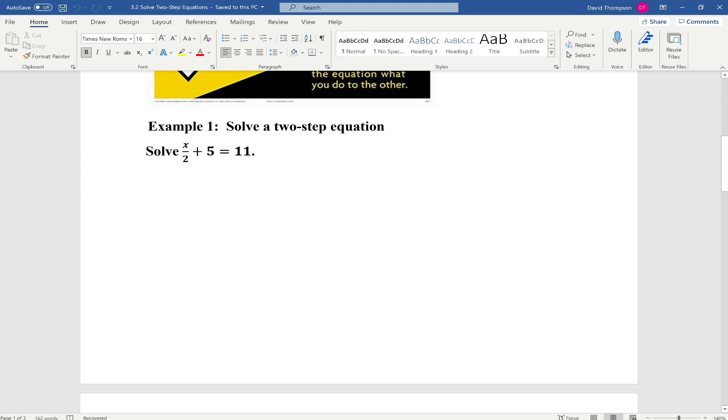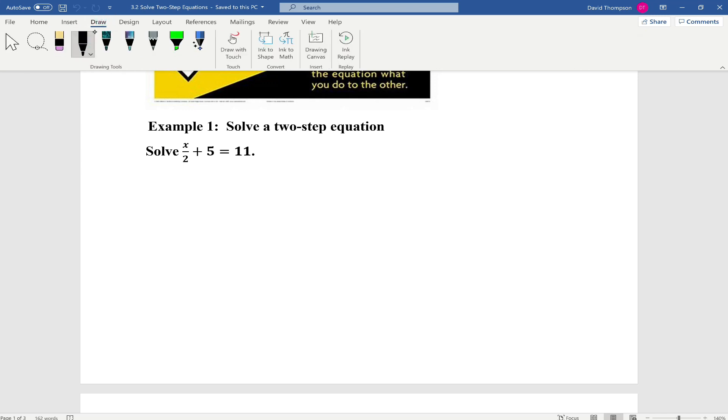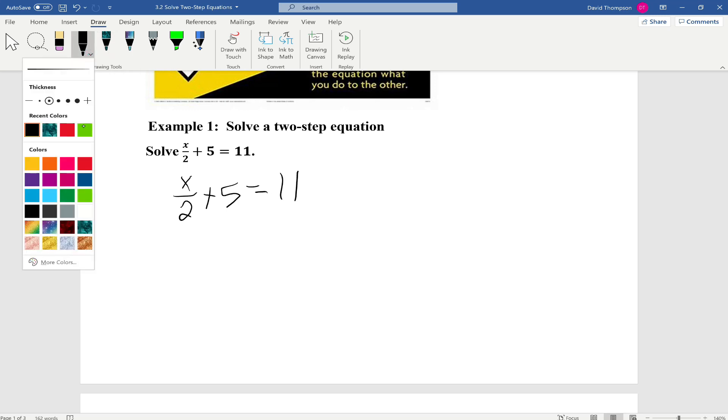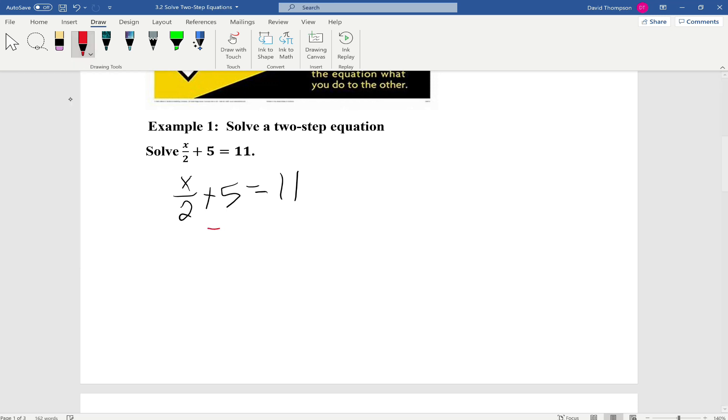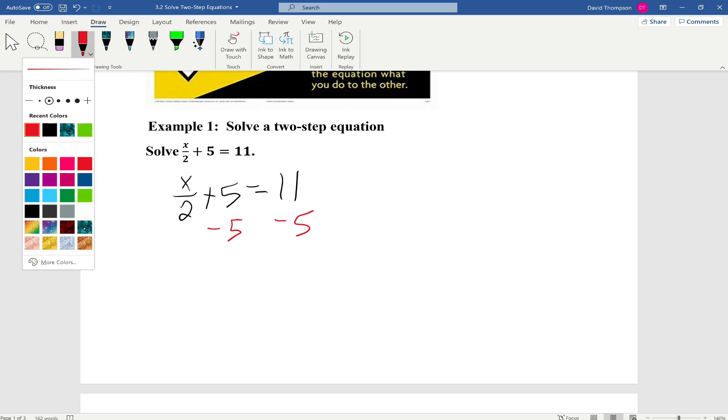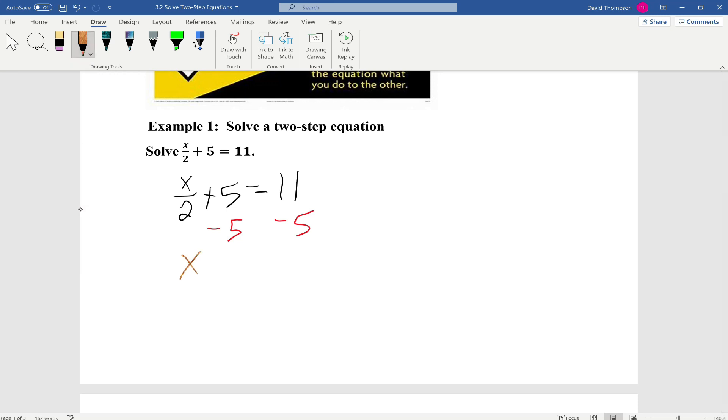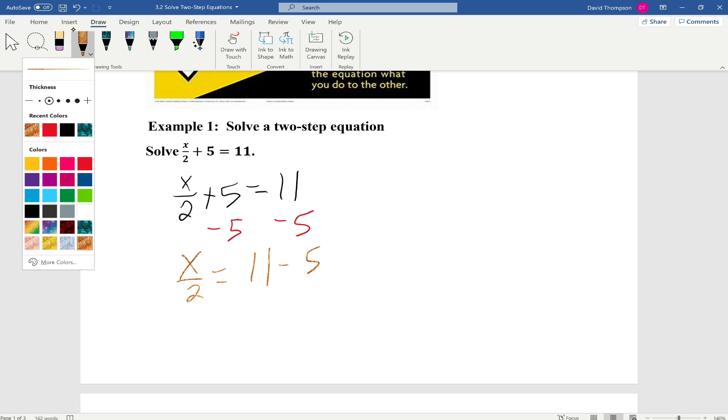Example 1. Solve a two-step equation. We're going to solve x divided by 2 plus 5 equals 11. So the first thing we're going to do is we write the original equation. So x divided by 2 plus 5 equals 11. Next thing we're going to do, we're going to subtract 5 from both sides. So we're going to be left with x divided by 2 equals 11 minus 5. And 11 minus 5 happens to be 6.